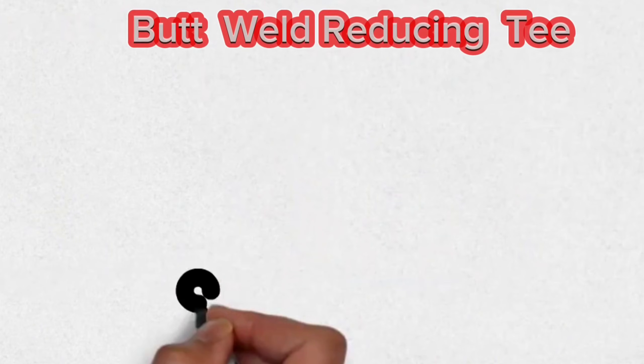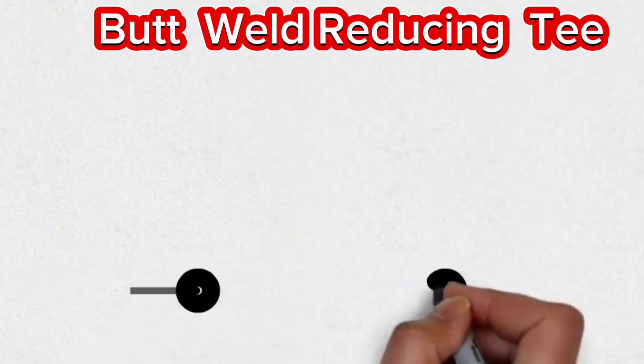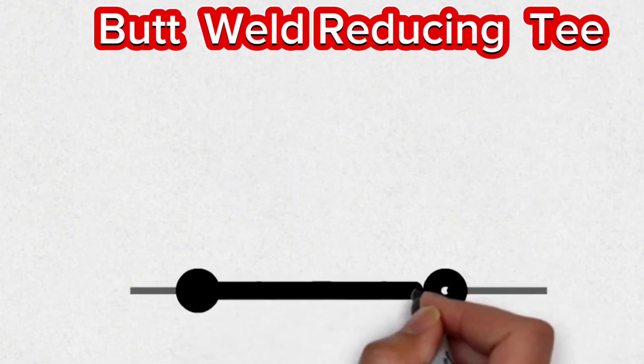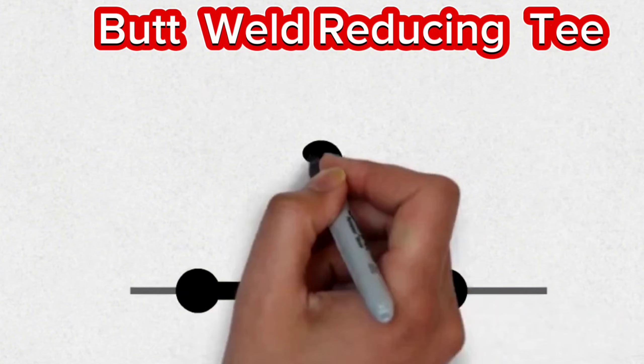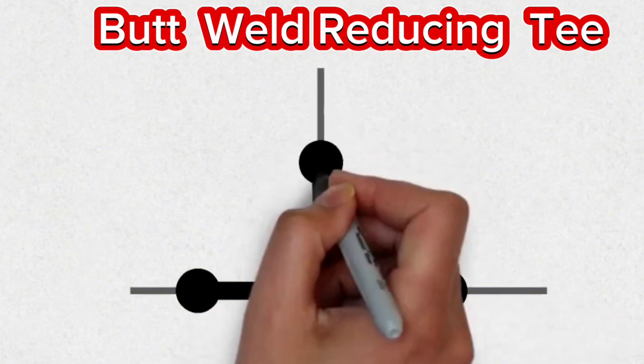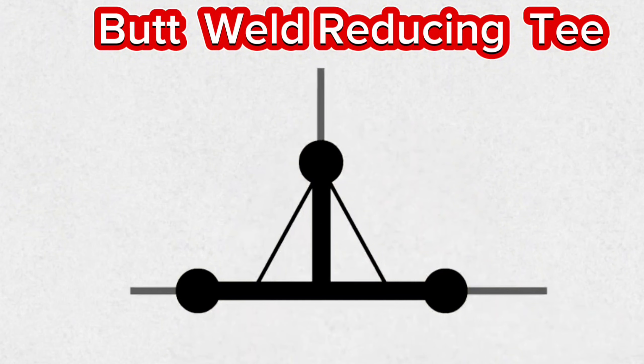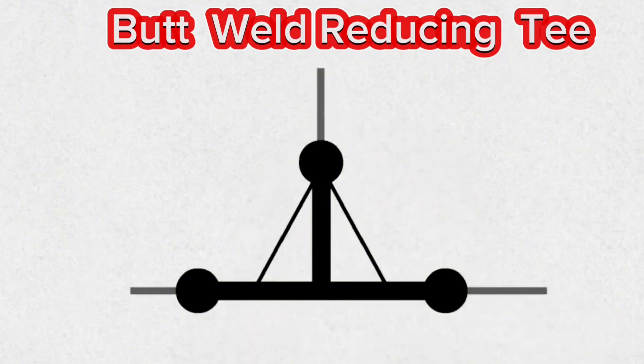This symbol, which is used in pipe isometrics, is the isometric symbol of the butt weld reducing pipe T. These reducing T symbols are used in pipeline projects where welding.